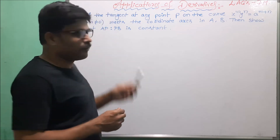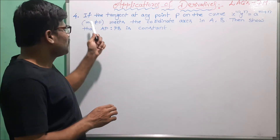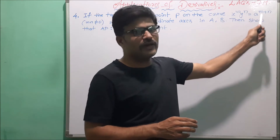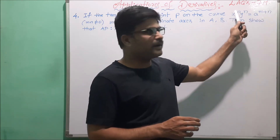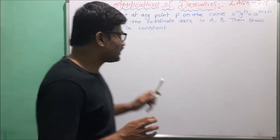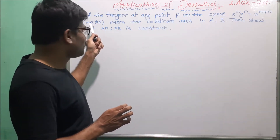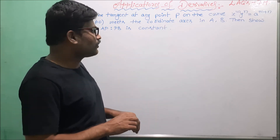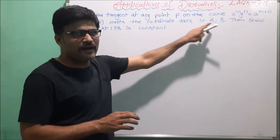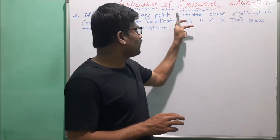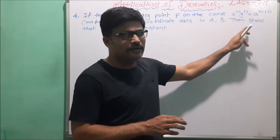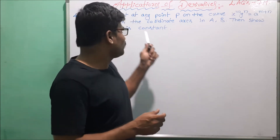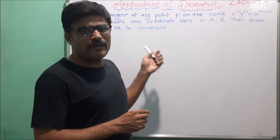The next problem: if the tangent at any point P on the curve x^m · y^n = a^(m+n), where mn is always not equal to zero, meets the coordinate axis, then the tangent of the curve at point P meets the coordinate axis in A and B. Then show that the ratio AP:PB is constant.